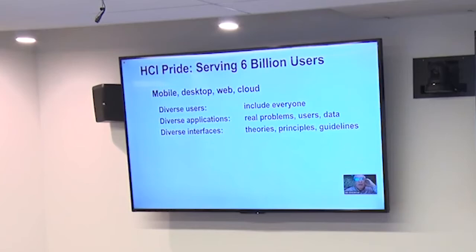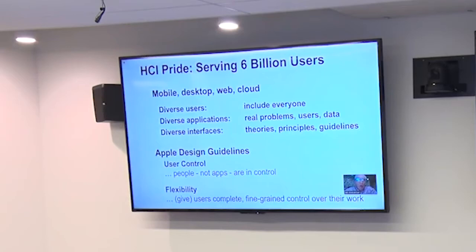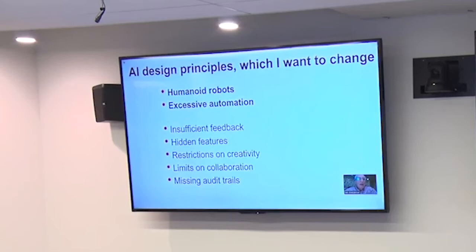HCI also looked at the diversity of applications from military to medical to consumer goods. It cared about impacts on society, environmental issues, sustainability, privacy, and security. As a result of diverse interfaces and many levels of theories, principles, and guidelines — referring to the Apple Human Interface Guidelines among others — they stress that users should be in control: people, not apps. That is a distinctive force between HCI and AI. Flexibility — giving users complete, fine-grained control over their work — emphasizes the human being as central and in control.